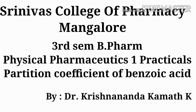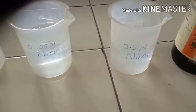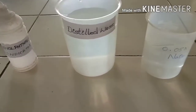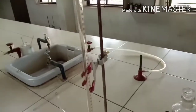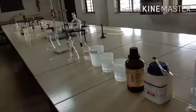This video explains the determination of the partition coefficient of benzoic acid between benzene and an aqueous layer, that is water. The chemicals required are benzoic acid, benzene, 0.05 normal sodium hydroxide, 0.5 normal sodium hydroxide, distilled water, and phenolphthalein indicator.